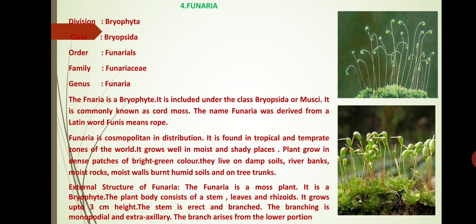Funaria is a Bryophyte; it is included under the class Bryopsida or Musci. It is commonly known as cord moss. The name Funaria was derived from a Latin word — 'Funis' means rope. Funaria is cosmopolitan in distribution; it is found in tropical and temperate regions of the world.